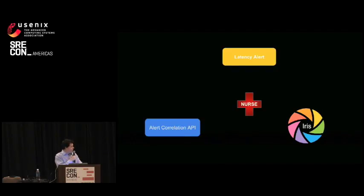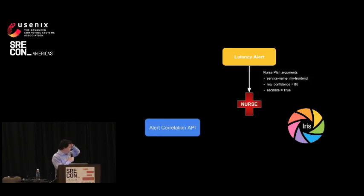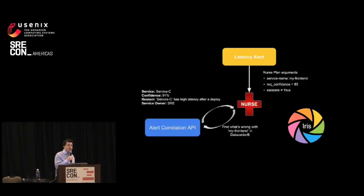So what does our use case look like? I have my latency alert for my frontend. And I want to be 85% sure that it's not my service before I go and call someone. And then I do want to call someone. So escalate to another team if we're sure. So Nurse goes and gets this alert. And it calls Correlation API. And it says, what is wrong with the my frontend service in data center B? Our Correlation API via Correlate frontend will analyze what it sees in the current state of the world. And then say, hey, we think Service C is broken. And we're 91% sure that that is what's causing it. And Service C has high latency after a deploy. And the SRE owner is SRE. I didn't want to shame any SRE teams at LinkedIn.